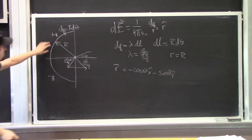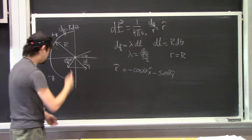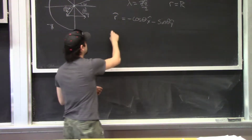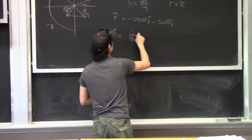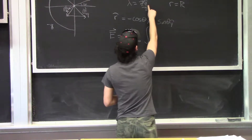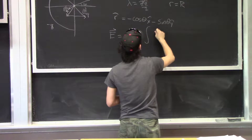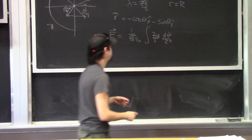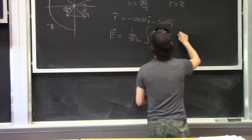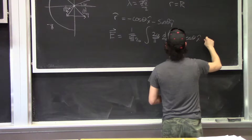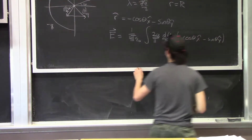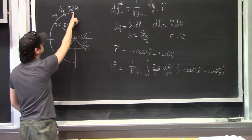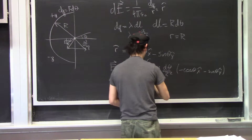We need to consider where our limits of integration begin and end. Putting this all together to find the electric field produced by the top arc: E equals 1 over 4πε₀ times the integral. This R cancels with this R, bringing the 2 into the numerator, giving 2Q divided by π times dθ divided by R², times the unit vector minus cosine(θ) x-hat minus sine(θ) y-hat. The limits of integration go from π/2 to π.